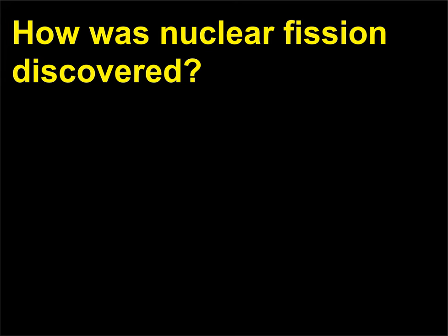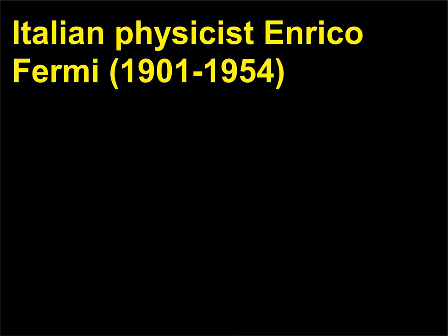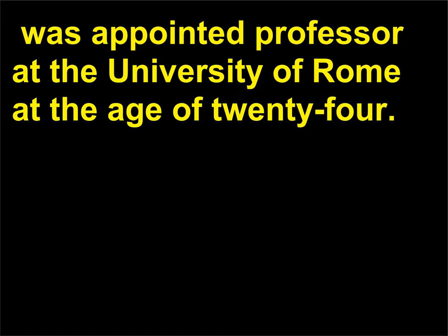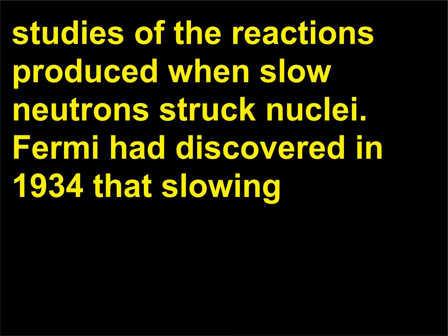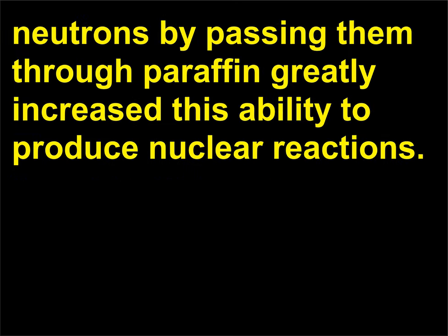How was nuclear fission discovered? Italian physicist Enrico Fermi (1901–1954) was appointed professor at the University of Rome at the age of 24. Among many projects in which he and his group were involved, perhaps none was more important than his studies of the reactions produced when slow neutrons struck nuclei. Fermi had discovered in 1934 that slowing neutrons by passing them through paraffin greatly increased their ability to produce nuclear reactions, and he did systematic studies of the results of bombarding a series of materials with slow neutrons.